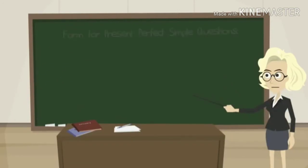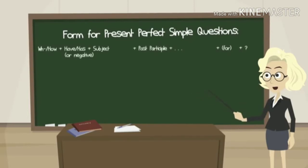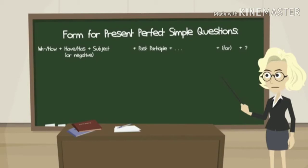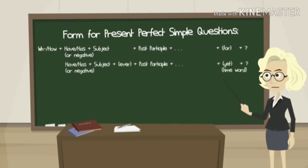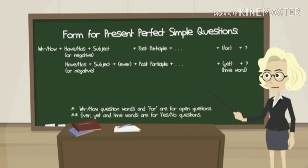Now let's have a look at the form for present perfect simple questions. For open questions, 'for' is optional. For yes/no questions, the form is: 'Have' or 'has' or their negative form, plus the subject, plus 'ever' — which is optional — plus the past participle, plus whatever you want to say, plus 'yet' or a time word. Again, these are optional. Remember, WH and how question words and 'for' are for open questions.